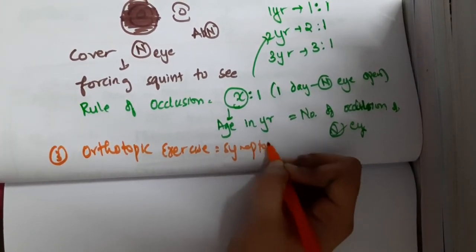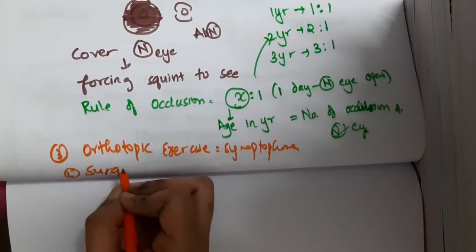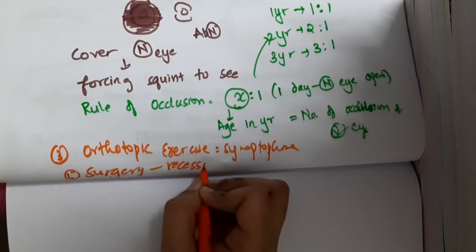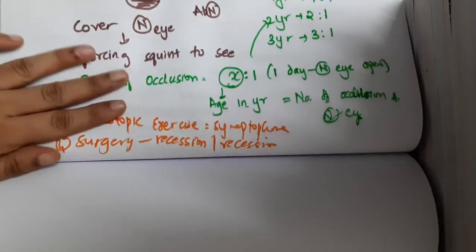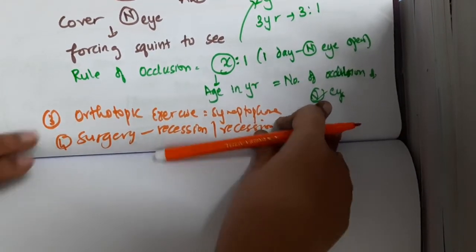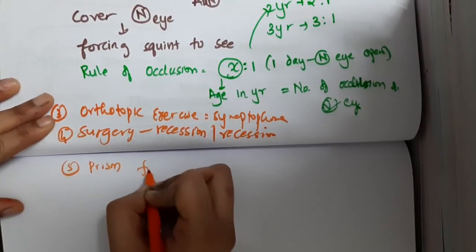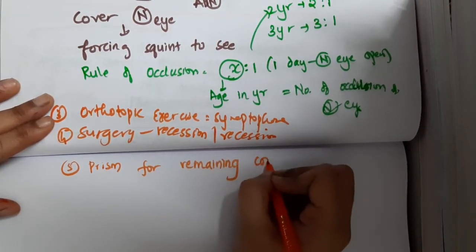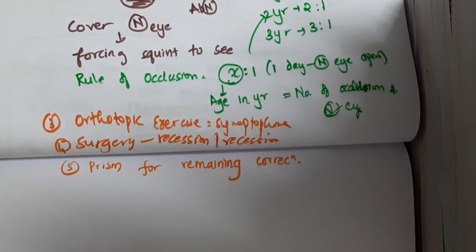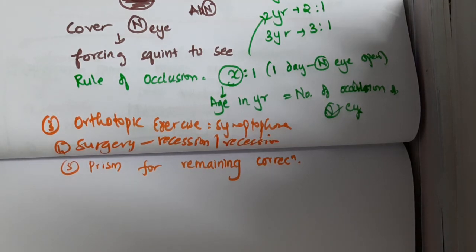Third, you can do orthoptic exercises, and a synaptophore can be used for these exercises. Fourth, surgery can be done — either recession surgery or resection surgery, depending on the type of squint. Prism therapy can also be given for any remaining residual error even after surgery.